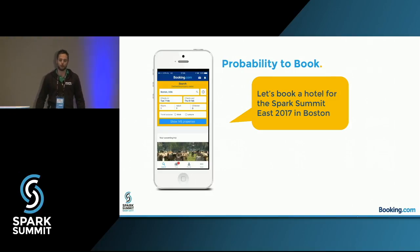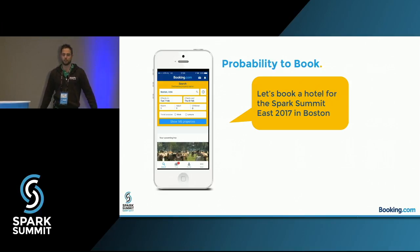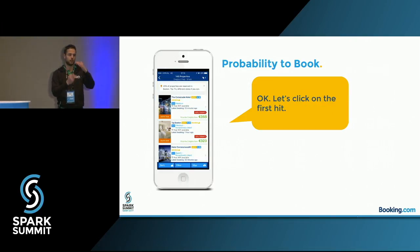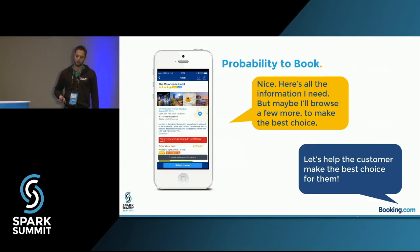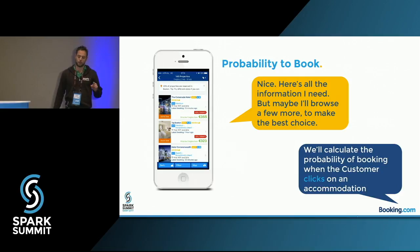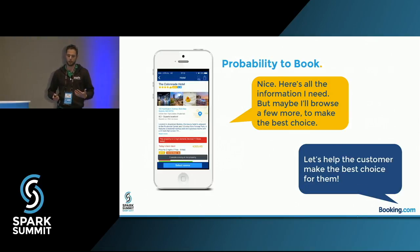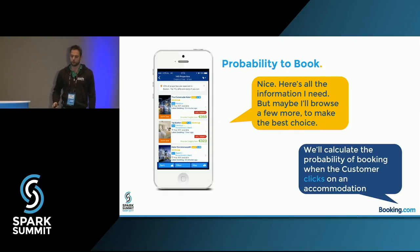I want to book a hotel in Boston for the Spark Summit. I type in Boston along with check-in and checkout dates, then get a list of hotel options. For the sake of argument, I click on the first hotel and see some information about it, but I decide to look at a few others as well. Let's assume we want to help the customer make the best choice. The moment someone clicks on one of the hotels, we want to calculate the probability that, being on that hotel page, the person actually books.